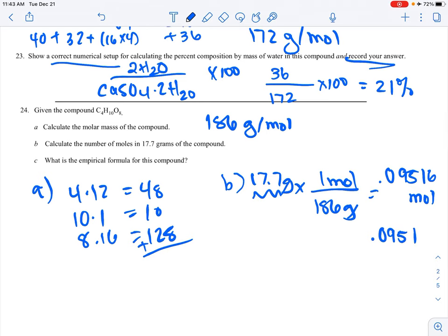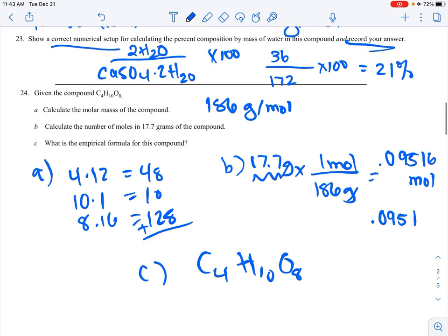What is the empirical formula for this compound? I need to simplify C4H10O8. If I take a 2 out of all of those, I get C2H5O4. That is as far as I'm going to go, because the 5 limits us. I can't take a 4 out of all of those. So C2H5O4.